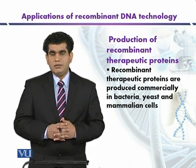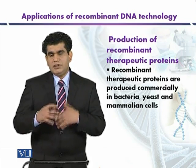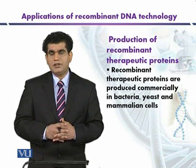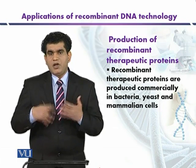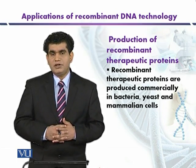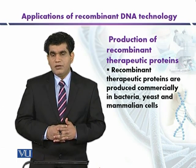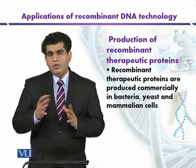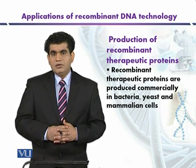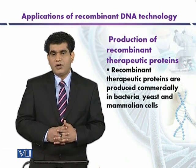Sometimes the donor bodies were infected with different types of diseases. For example, prions could infect and damage the nervous system. There were also concerns regarding blood factors. So these types of sources could not be used for a longer time.